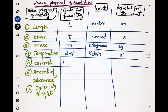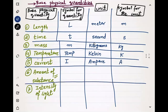The next quantity is current. The symbol for current is I, the unit for current is ampere, and the symbol for ampere is A. Amount of substance: the symbol is smaller n and the unit is mole, represented by smaller n. Intensity of light is represented by capital I, the unit is candela, and it is represented by cd. This seventh quantity is not very common or important.